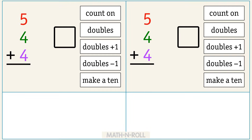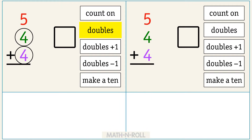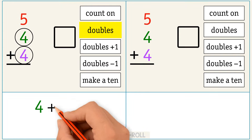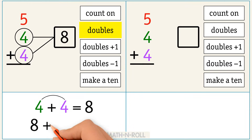5 plus 4 plus 4. We see two of the same numbers, so we use doubles. We circle 4 and 4. Now we add them. 4 plus 4 equals 8. Now add 5 to 8. We get 13. So 5 plus 4 plus 4 equals 13.